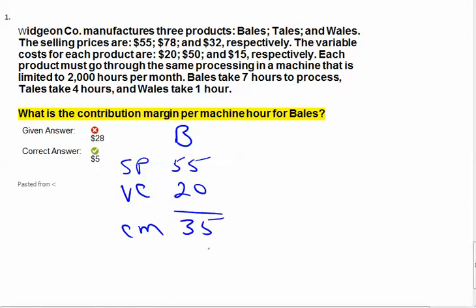Now, bales take seven hours to process in that machine, so we can divide the $35 by seven. $35 divided by seven is $5. So there's my contribution margin per machine hour.